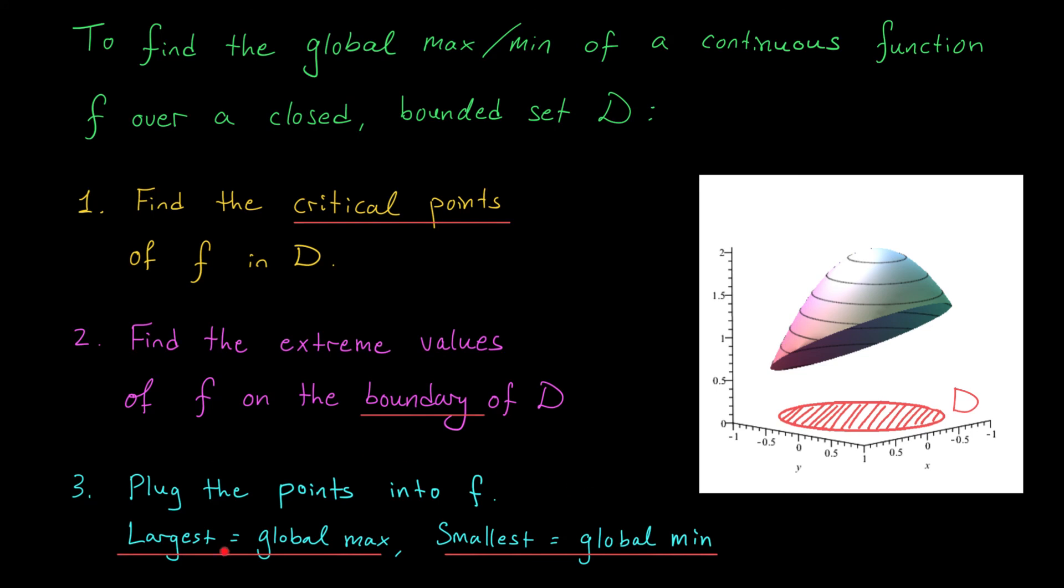Finally, the last step is exactly the same as it was in calc 1. We're gonna take all the points that we found in step 1 and step 2 and plug them into the function f. The largest value we get is gonna be our global max, the smallest value is gonna be our global min.